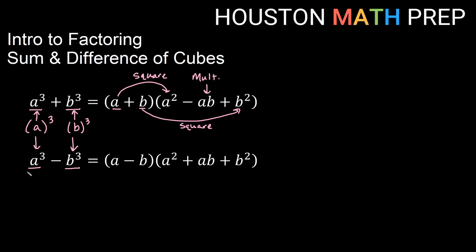Same thing down here — this is A cubed and this is B cubed. So we have A and B in the short factor. A squared gives us the first term, B squared gives us the back term, and multiplying A and B gives us the middle term.